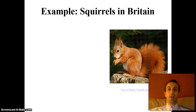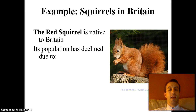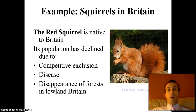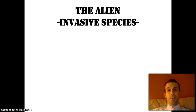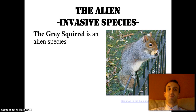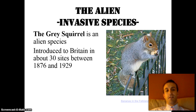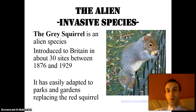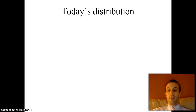Case in point: squirrels in Britain. This is an adorable little red squirrel, native to Britain, whose population has declined over the last hundred years due to competitive exclusion, disease, and the loss of forests. Not too long ago, the gray squirrel was introduced — the invasive species, the alien. Between 1876 and 1929, it was introduced to Britain at about 30 sites. It took over the red squirrel's niche — well and proper occupied — and ran the poor little red squirrel out.